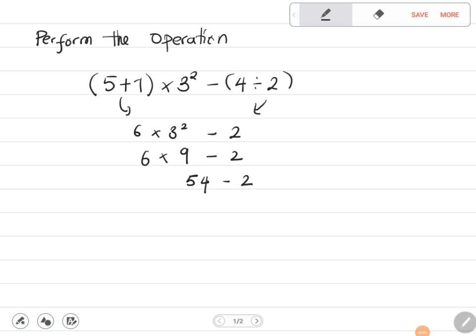Then we say minus what? Minus 2. And what is 54 minus 2? You get 52. If this came in the exam, would you have gotten everything?